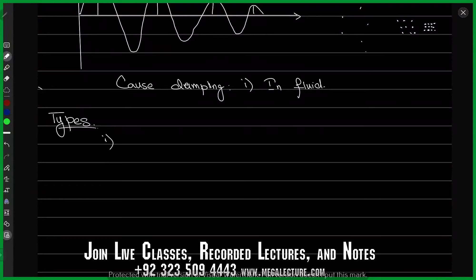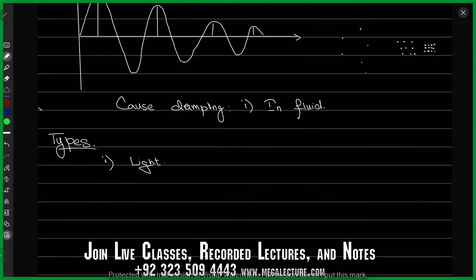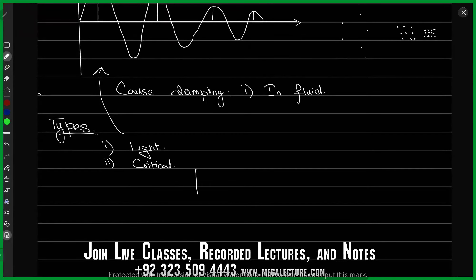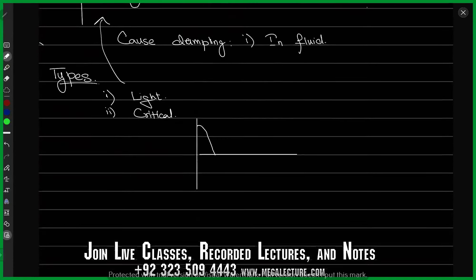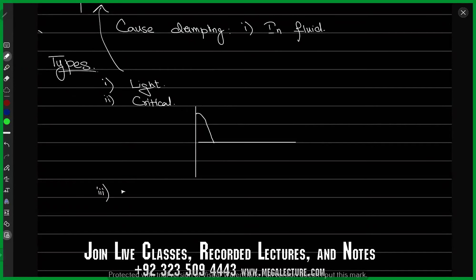The first type is light damping, and its graph looks like the decreasing sinusoidal curve described earlier. The second is critical damping, where the vibrations die out very quickly — for example, oil could produce this. The graph shows oscillations dying out rapidly and reaching zero, after which there is no more oscillation. The third type is heavy damping, where the oscillations die out even more slowly or in a different manner depending on the damping medium.